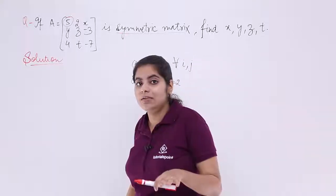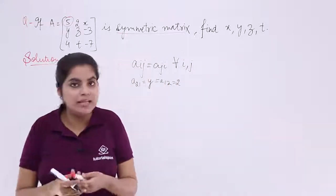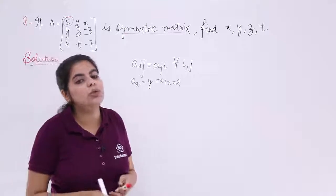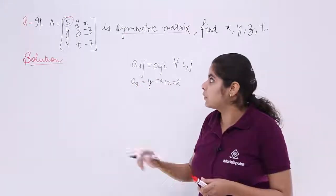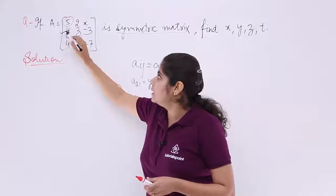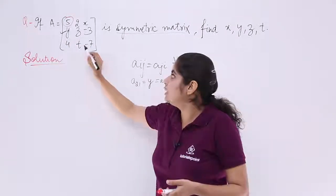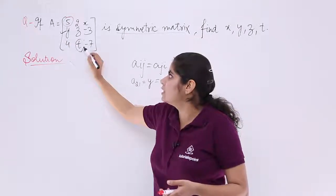y because it is a symmetric matrix, the definition follows that A_ij is equal to A_ji. So I have found out one value out of 4 which is y. Next, if y is done, we come to the next set. The next set is T.